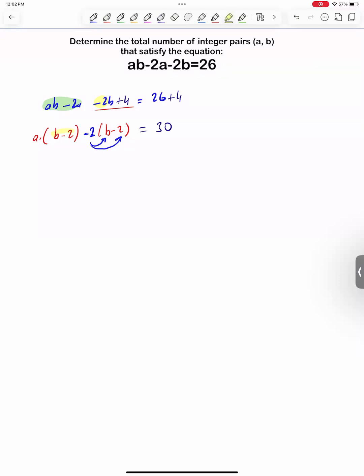Now, if we take b minus 2 as the common factor out, we have a minus 2 as the second binomial, which equals 30.